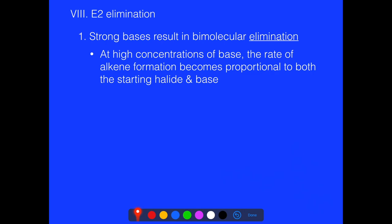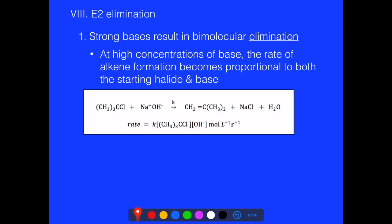To favor E2, we generally use a strong base in high concentration. The rate of alkene formation becomes proportional to both the starting halide and the base — both the substrate and the base — so it's bimolecular. Unlike E1 elimination, which only depends on carbocation formation, E2 depends on both the substrate and the base.